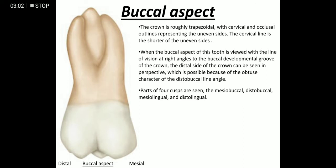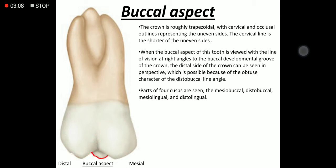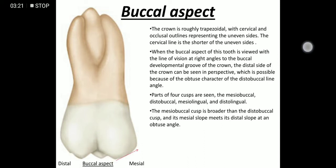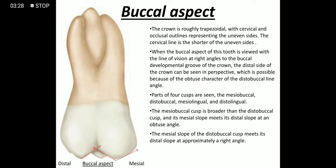Parts of all four cusps are seen: mesobuccal, distobuccal, mesolingual, and distolingual. The mesobuccal cusp is broader than the distobuccal cusp, and its mesial slope meets the distal slope at an obtuse angle. The mesial slope of the distobuccal cusp meets its distal slope at approximately a right angle.